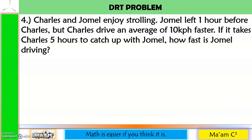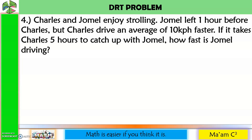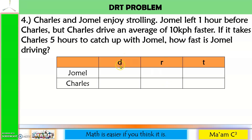Charles and Jomel enjoy strolling. Jomel left 1 hour before Charles, but Charles drives an average of 10 km per hour faster. If it takes Charles 5 hours to catch up with Jomel, how fast is Jomel driving? Create a table for Distance, Rate, and Time. The distances of Jomel and Charles are equal because Charles was able to catch up with Jomel.